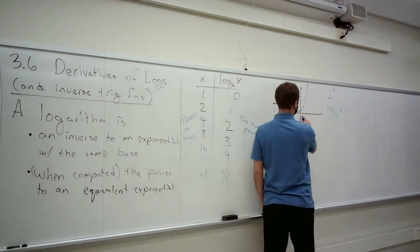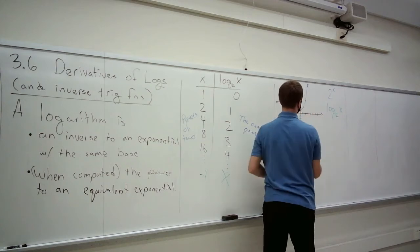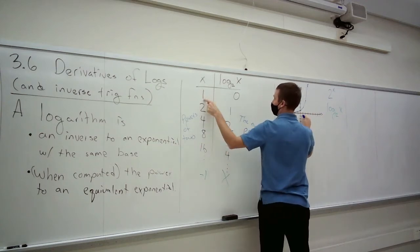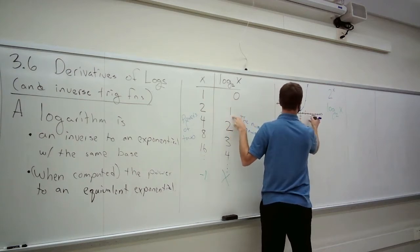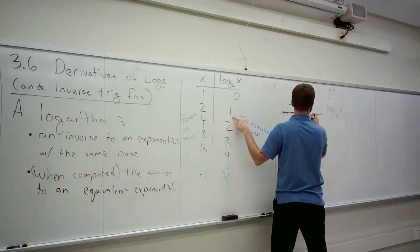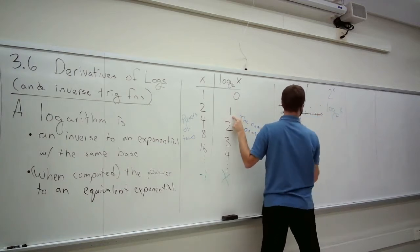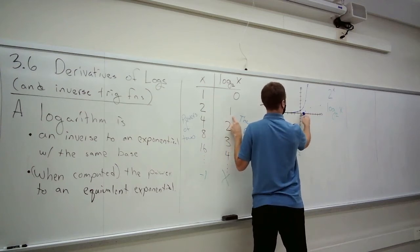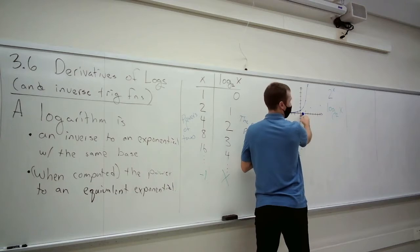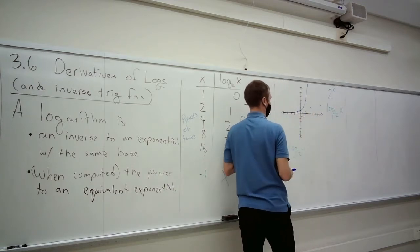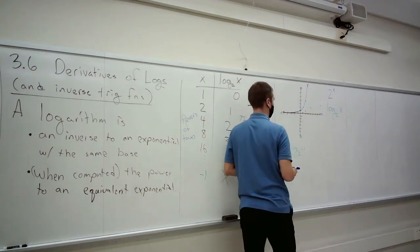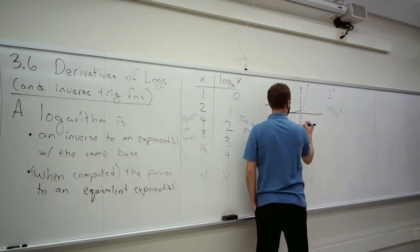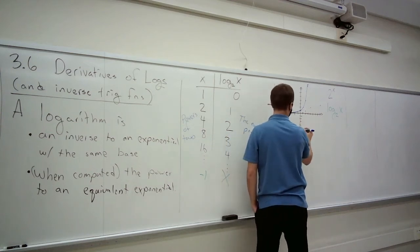We can ask where else the log is defined. Plug in 1, get 0. Plug in 2, get 1. Plug in 4, get 2. Plug in 8, get 3. What if we plug in one-half? That's 2 to the negative first, so we get negative 1. One-fourth is 2 to the negative second, so negative 2. One-eighth is 2 to the negative third. One-sixteenth is 2 to the negative fourth. One-thirty-second is 2 to the negative fifth. So the logarithm has a vertical asymptote.